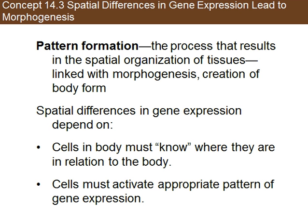First we have pattern formation. The whole idea of morphogenesis is to create that body form — meaning where are these tissues going to be in relation to each other. Pattern formation is the process that results in the spatial organization of tissues linked to morphogenesis. The spatial differences in gene expression depend on cells knowing where they need to be in relation to other body parts, and being activated in an appropriate pattern with appropriate timing of gene expression.